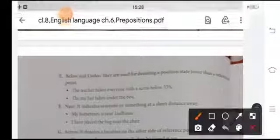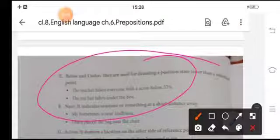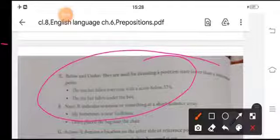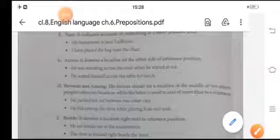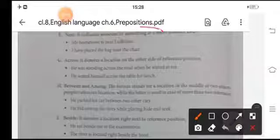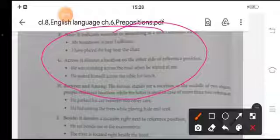Below and under is used where they are used for denoting the position or the state of a lower reference. Like the toy has fallen under the bed, or you can say the teacher failed everyone who scored below 33%. Near is used when we are talking about a very short distance. And across is used to denote a location on the either side of a reference position.